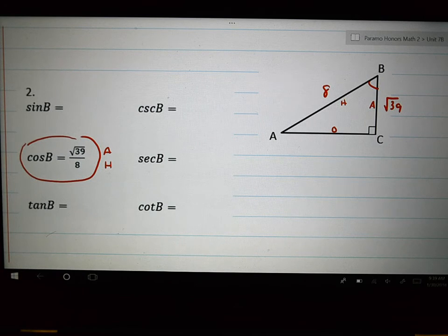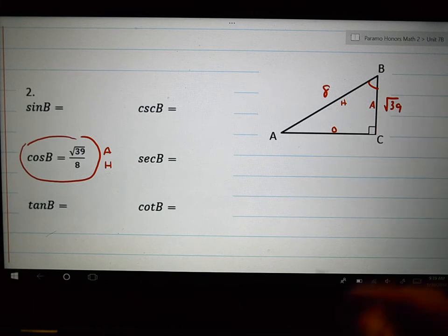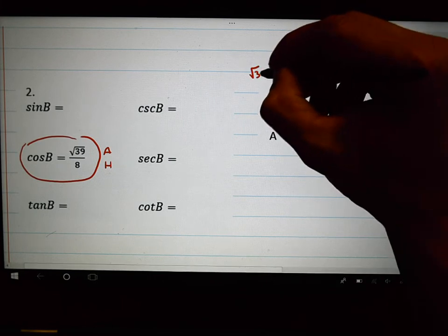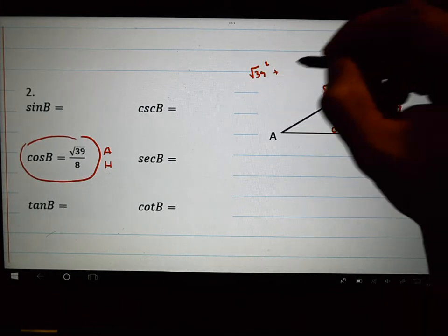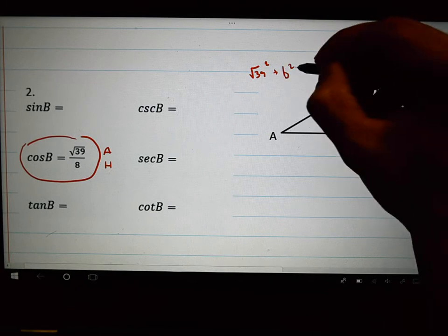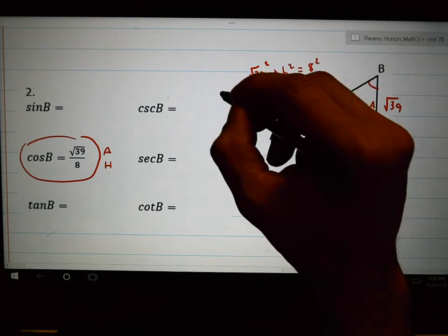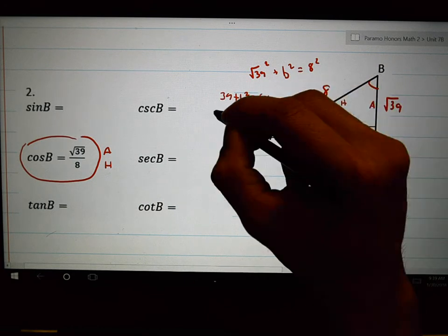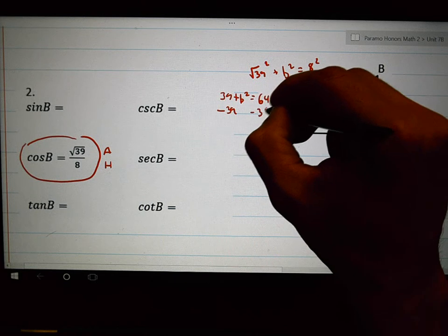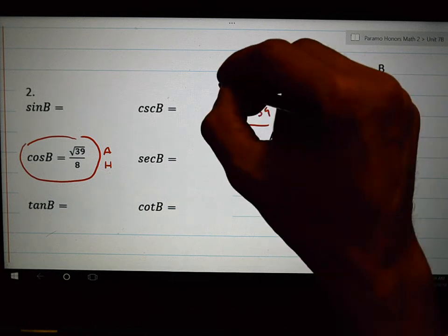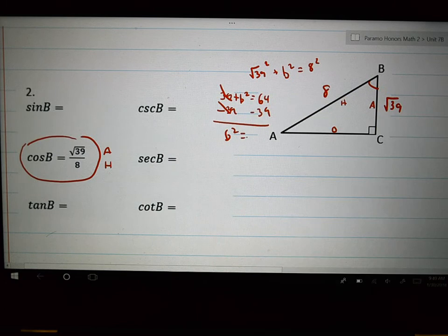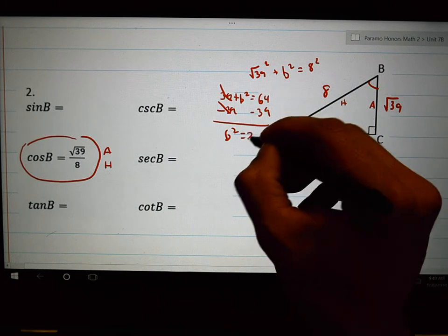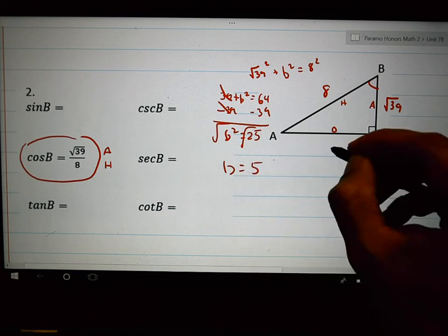That comes from unit 7A. And if I know two sides of a right triangle, how do we find the third side? We're going to use the Pythagorean theorem. So how do I do the Pythagorean theorem? I do A squared plus B squared equals C squared. And so off to the side here, I can do root 39 squared. That's easy. Plus, I don't know what little b is squared, equals 8 squared. So I have 39 plus B squared equals 64. I'm going to subtract 39 from 64. B squared equals 25. Square root, square root. B has to be equal to 5.